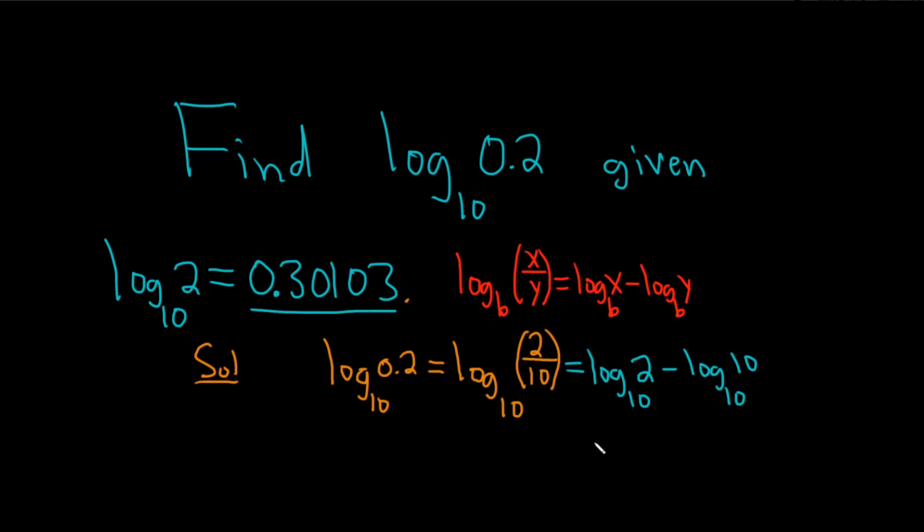And they gave us this in the problem, so we can plug it in. So this is 0.30103 minus, and this is 1. Whenever these numbers are the same, you just get 1. And so this is equal to, let me just type it into my calculator very carefully, minus 1.